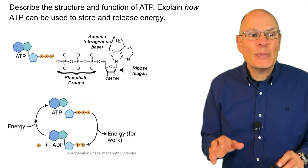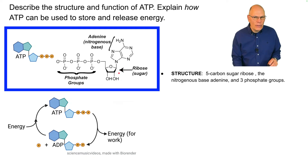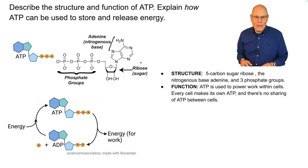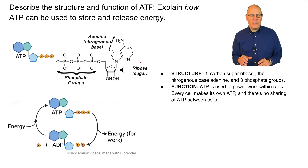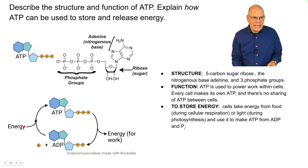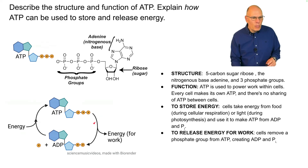Describe the structure and function of ATP. The structure of ATP involves a five-carbon sugar called ribose, a nitrogenous base called adenine, and three phosphate groups. The function of ATP is to power work within cells — every cell makes its own ATP, there's no sharing of ATP between cells. To store energy, cells take energy from food during cellular respiration or light during photosynthesis and use that to combine ADP and a phosphate group into ATP.